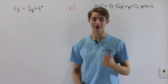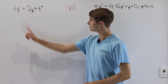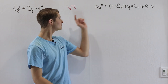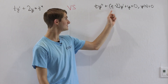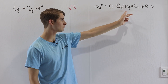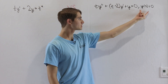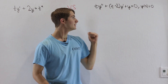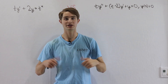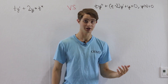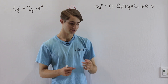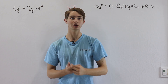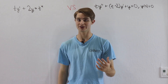We are going to do another differential equation battle: ty prime plus 2y equals t to the fourth versus ty double prime plus t minus 2y prime plus y equals 0, with the extra condition that y of 0 equals 0. In both cases, the coefficients are no longer constant, which means our standard methods for solving homogeneous differential equations and undetermined coefficients are not going to work.